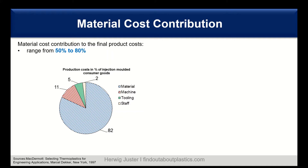Let us start with the material cost contribution. When you look at an injection molded part, for example here in the field of consumer goods, you see that the material part is with over 80% the biggest contribution factor onto the overall cost of the product, followed by machine costs, the tooling itself, and the staff.